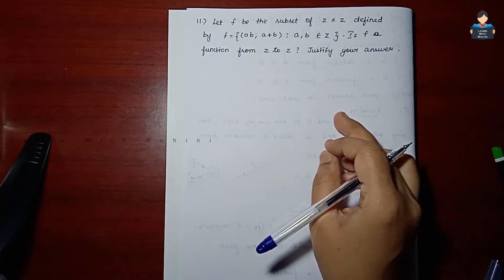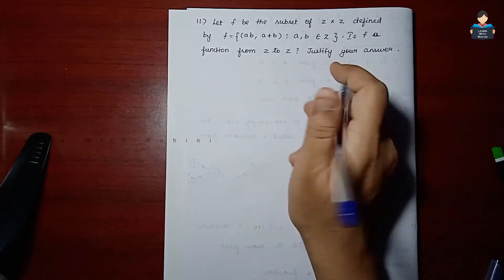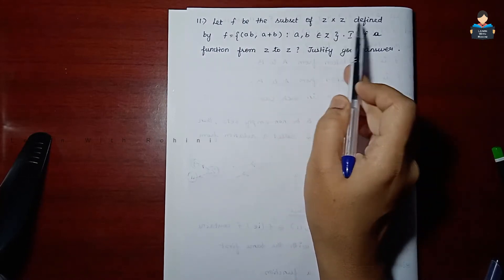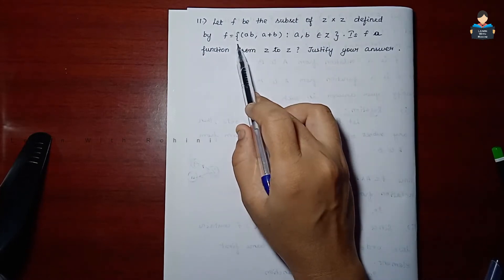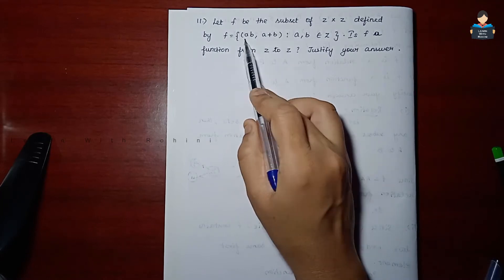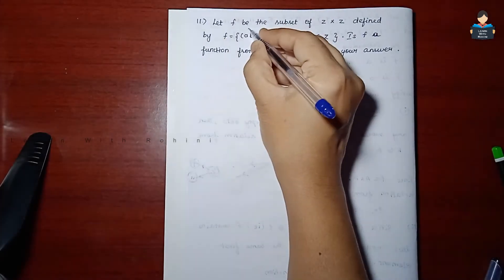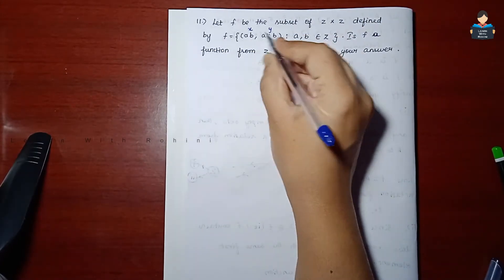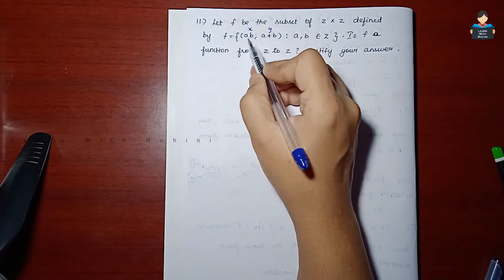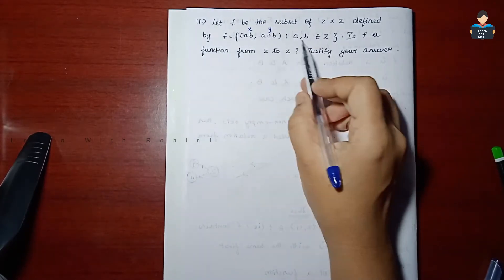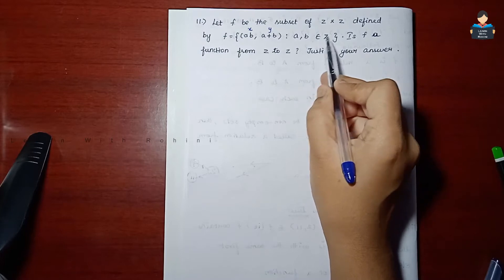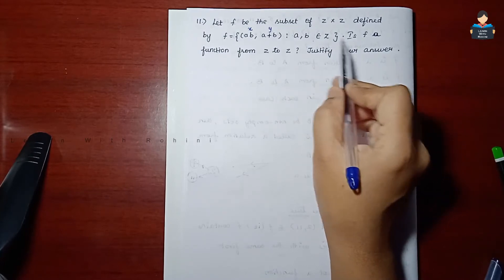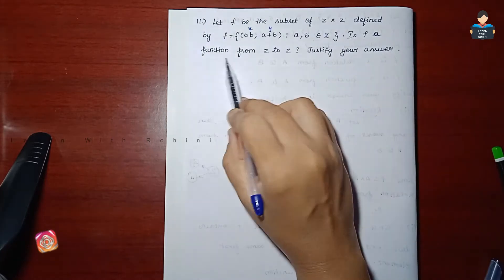Miscellaneous Exercise, 11th sum. Let f be the subset of Z cross Z defined by f = {(ab, a+b) : a, b ∈ Z}, where x = ab and y = a+b. Z is the set of integers. Is f a function from Z to Z? Justify your answer.